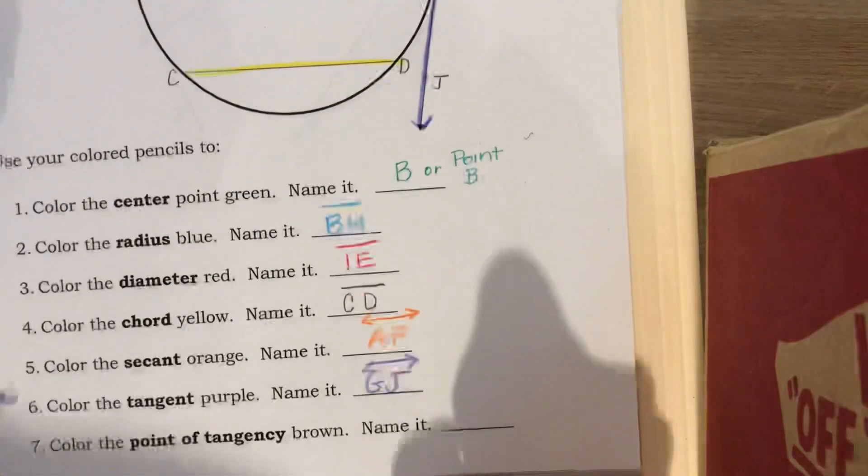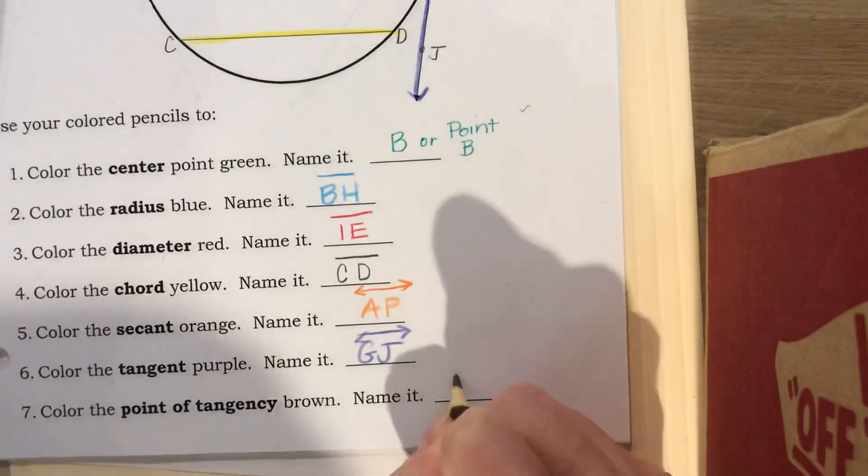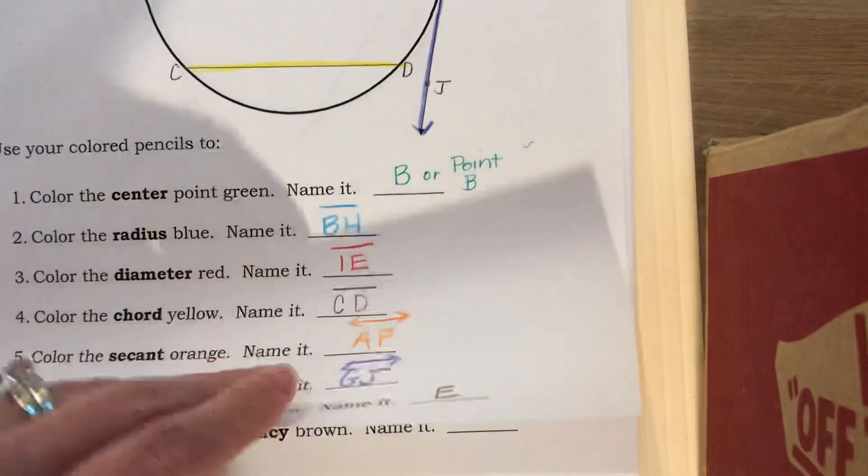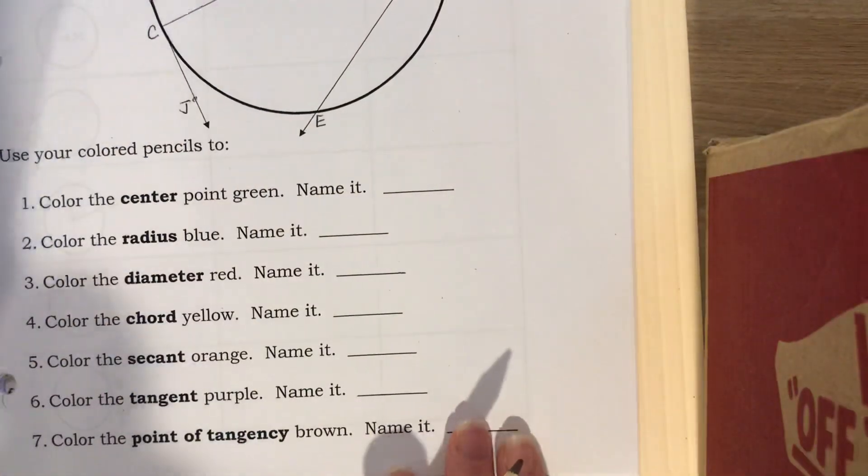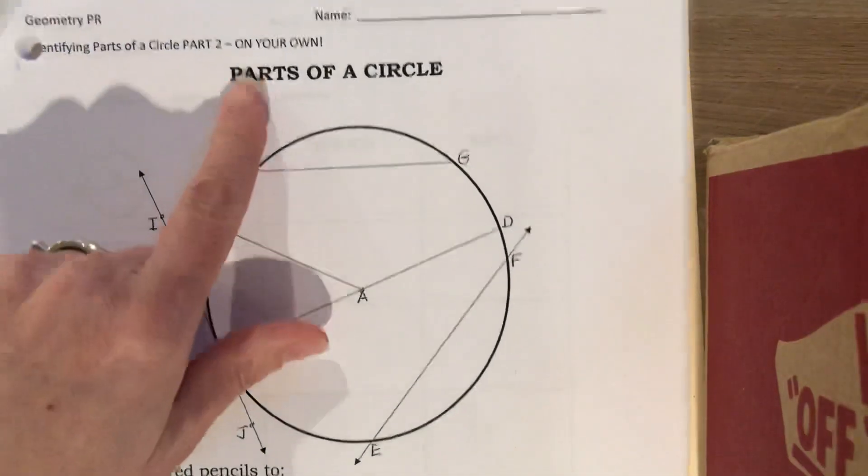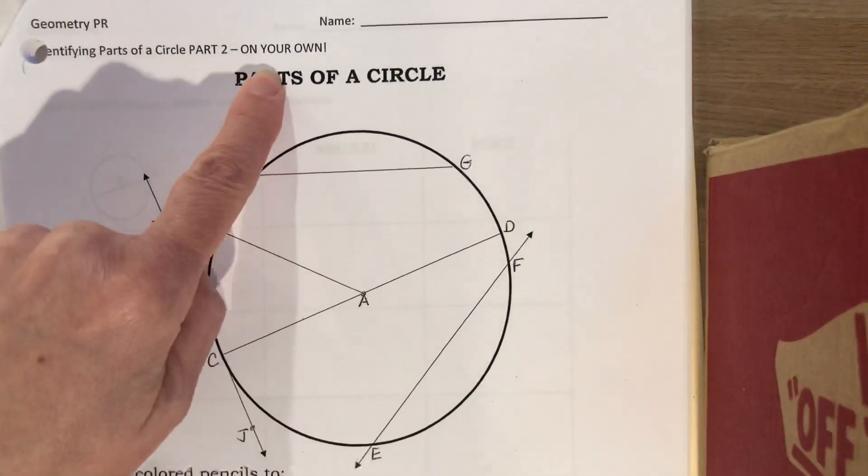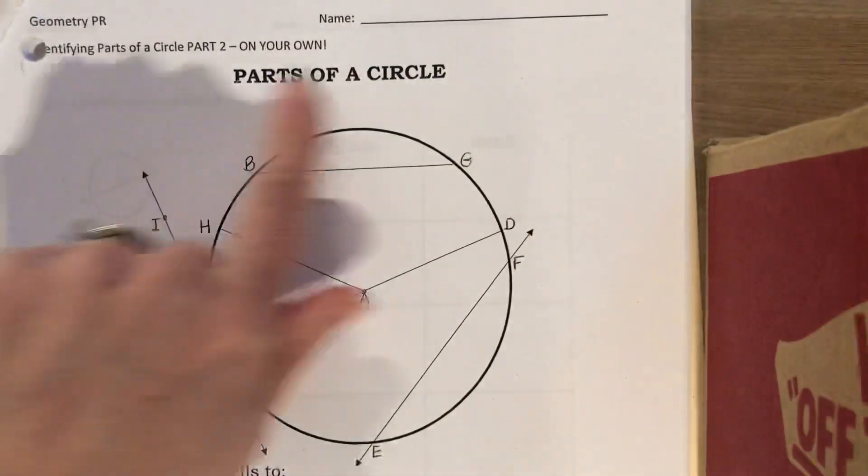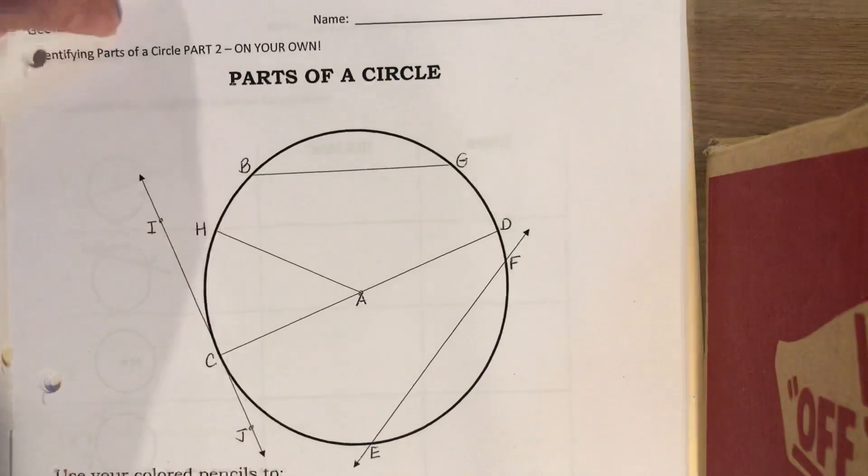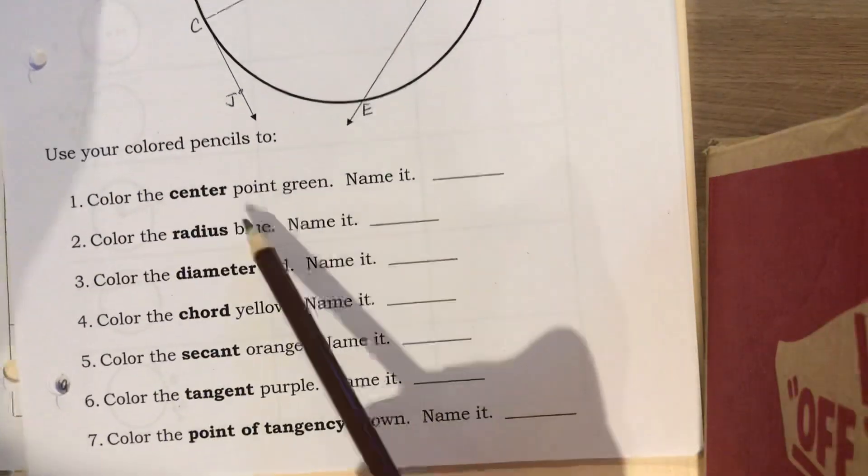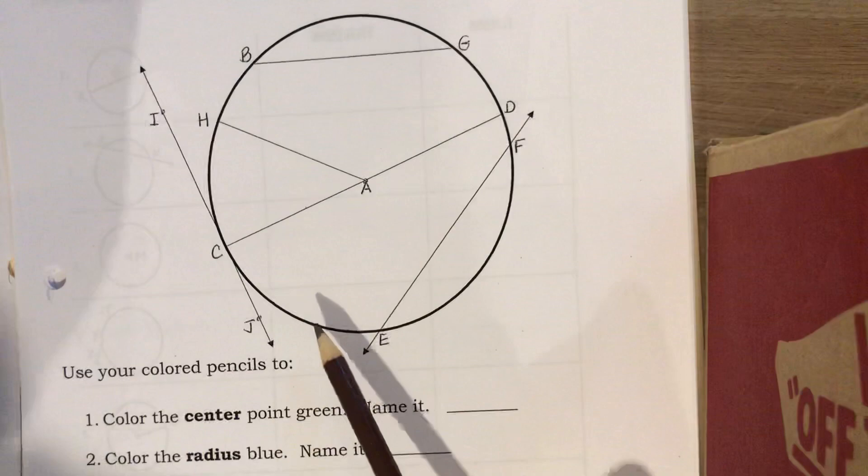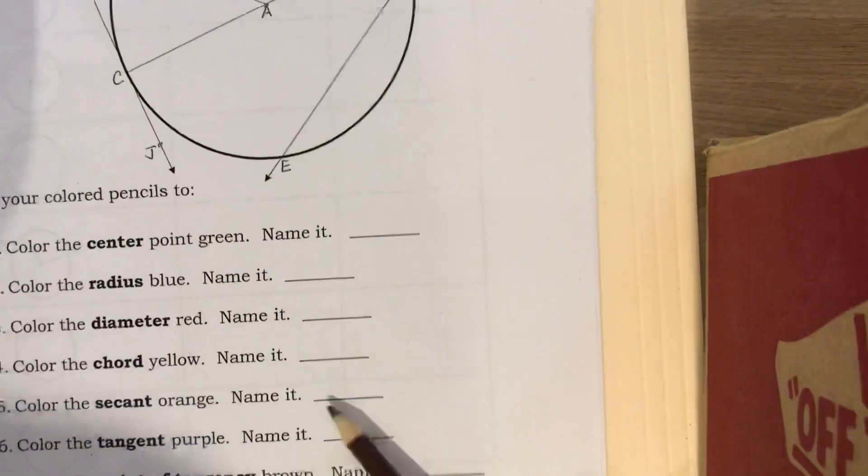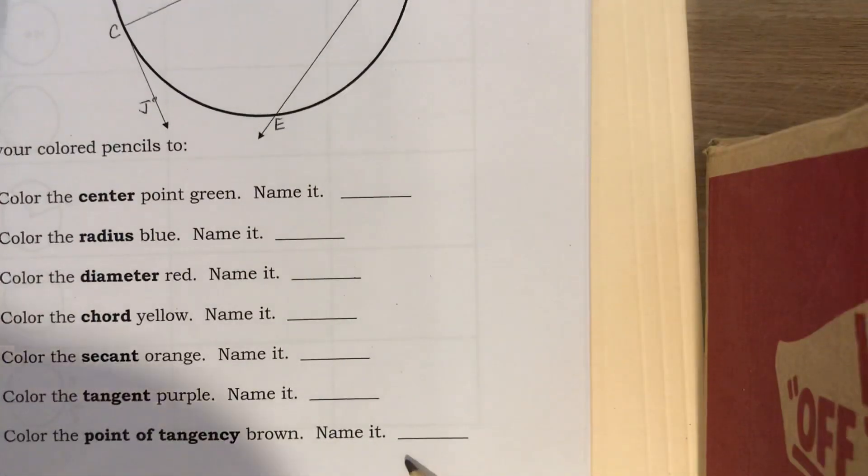I'm going to flip the page really quickly because what you're going to have to do on your own, you're gonna have to do exactly what we did on the page before that I just went over. It's another diagram, different letters. It's asking you to highlight. If you have the colors great, do what we just did. If you don't, then just name them on the blank lines provided.